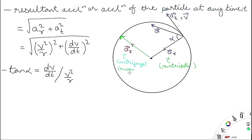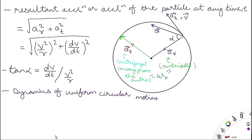In the figure, the direction of tangential velocity V, net acceleration a, and radial centripetal acceleration ar can be seen. Centripetal acceleration is towards the center; centrifugal acceleration is away from the center. Both have the same magnitude ω²r, but differ only in direction.